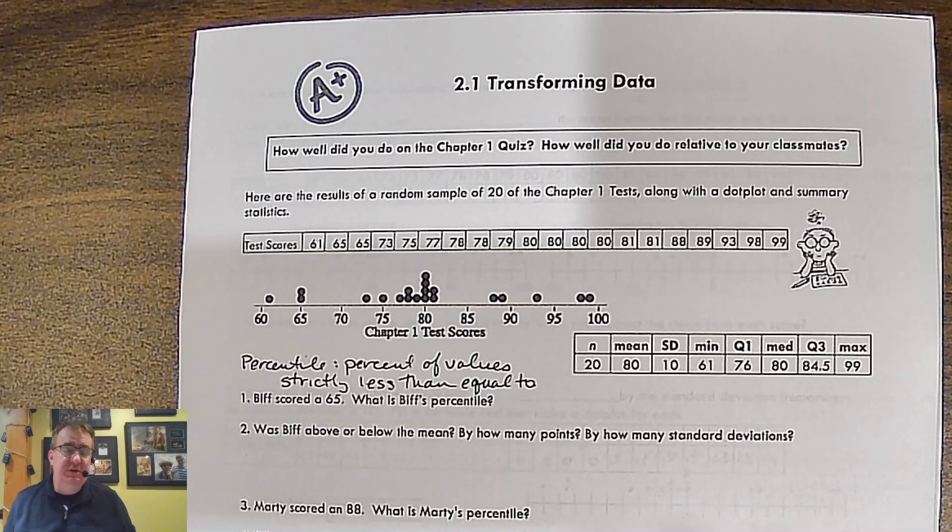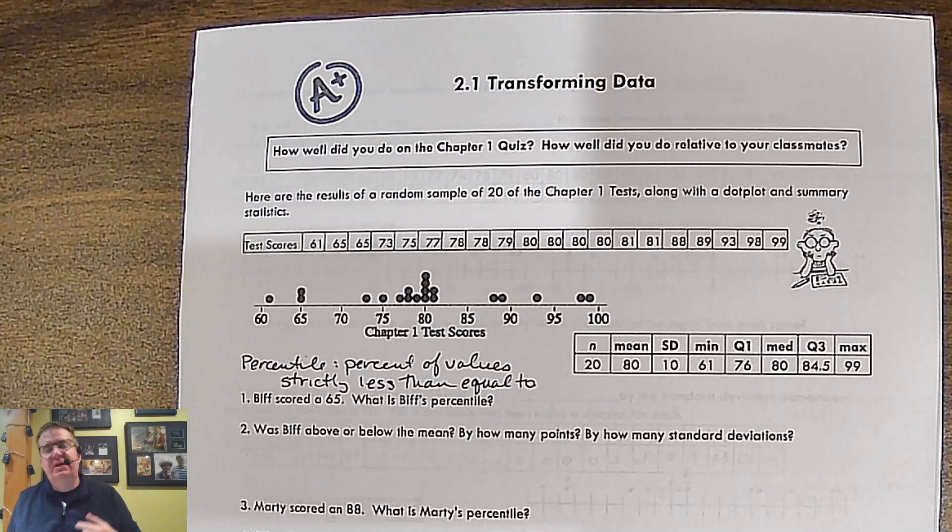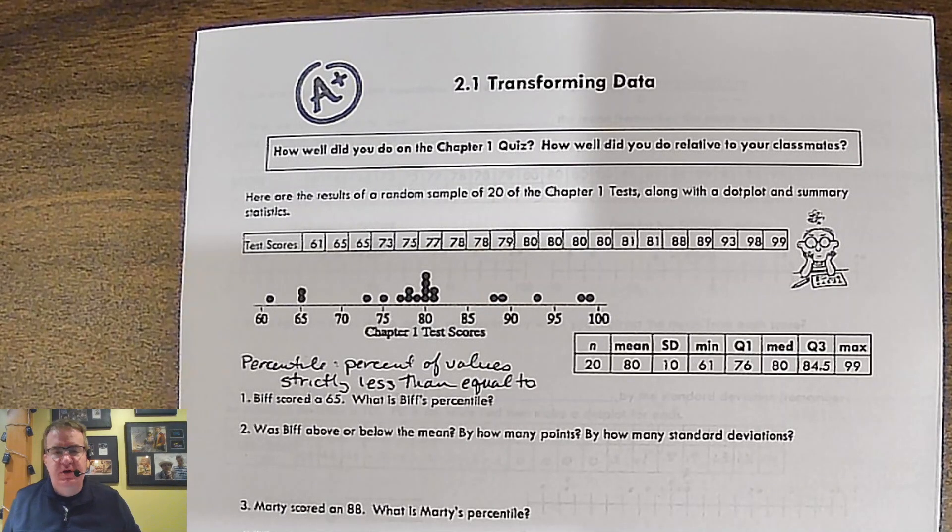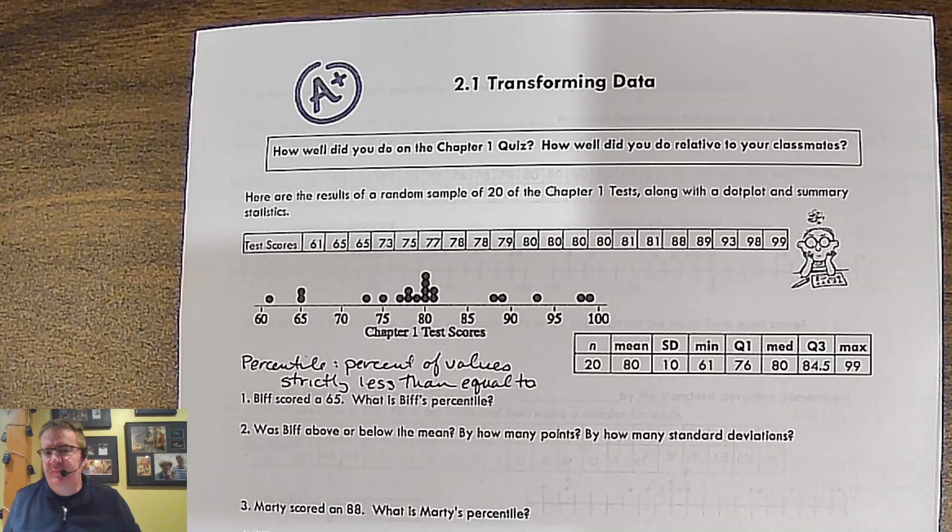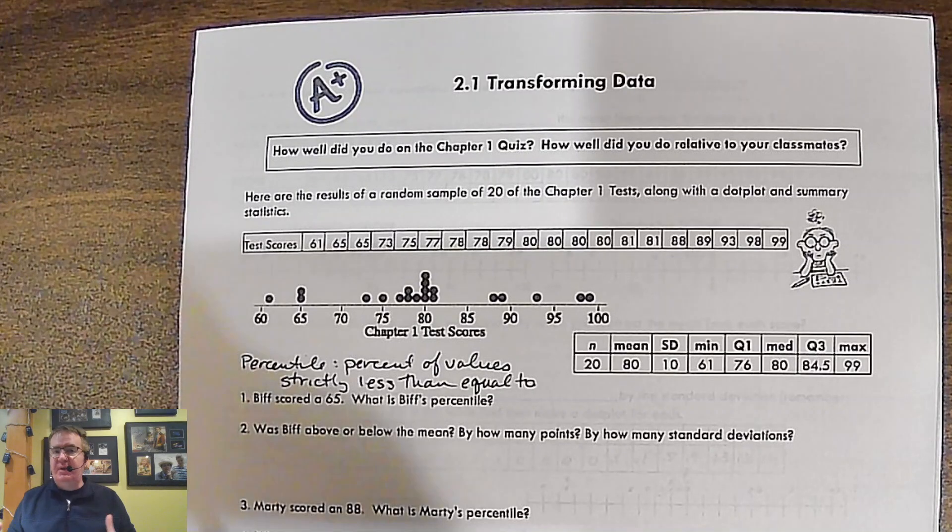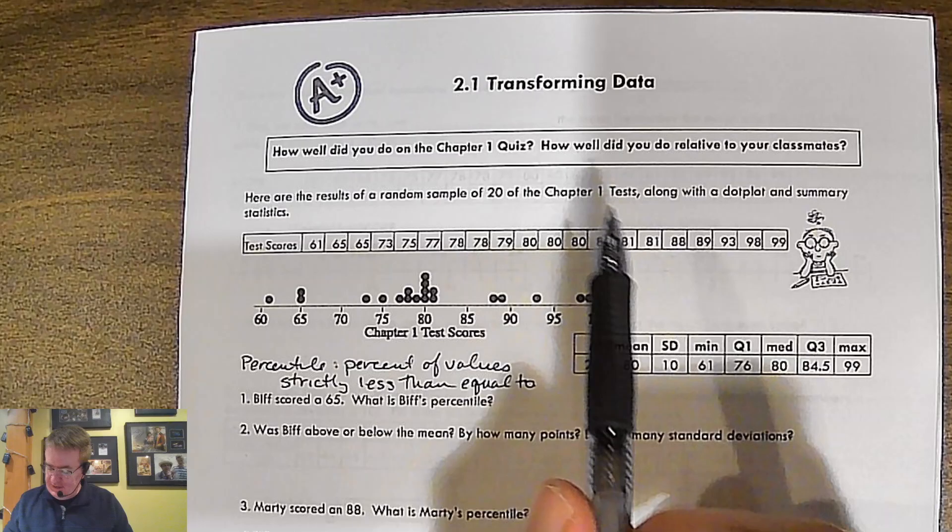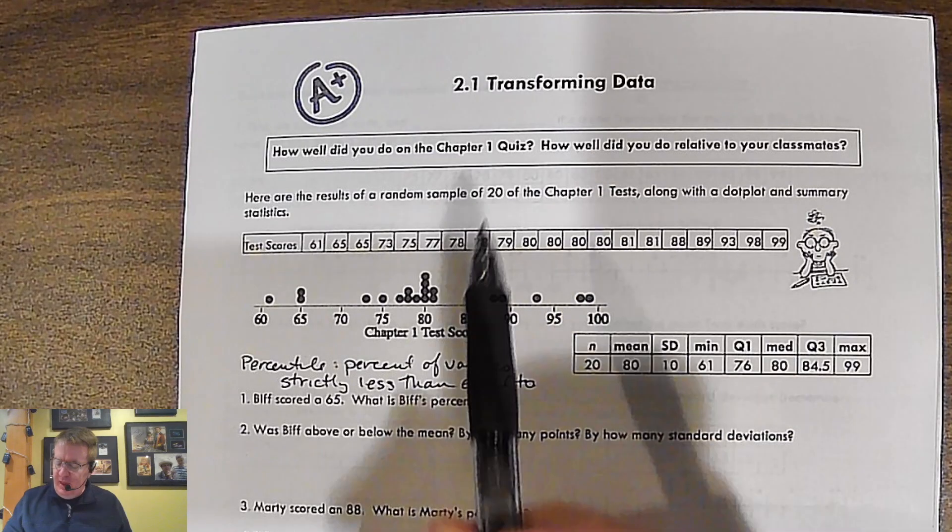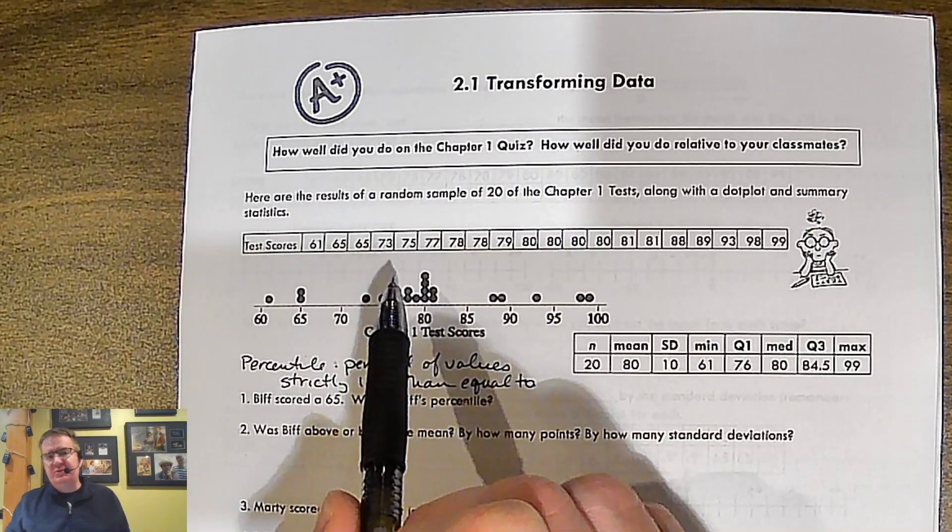And it's going to be a large portion of the role in your AP exam, because it's all going to talk about how we compare data. And today we're going to start talking about transforming data initially. So normally at this point you've taken the chapter one test. So we start talking about, let's take a look at the exam scores and go from there.